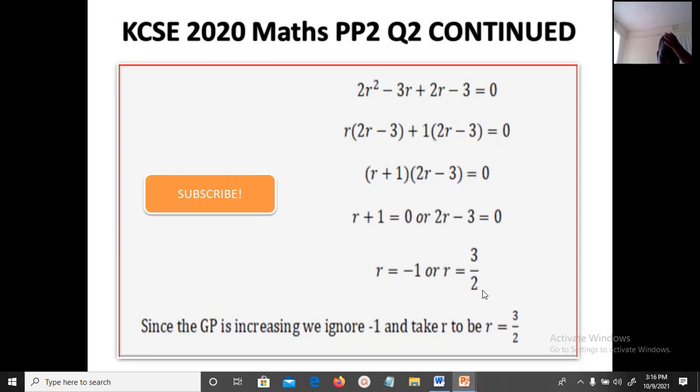Now since this is an increasing GP, there is no way we can use negative 1 in this case, because if we use negative 1 as our common ratio then it means the value is going to decrease. Therefore, we will resort to r is equal to 3 over 2. So the value of r is 3 over 2.